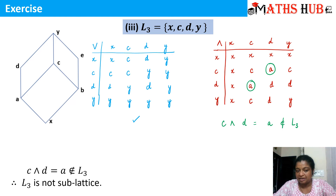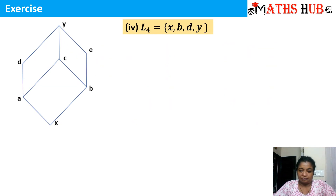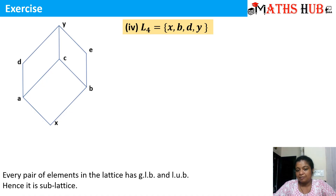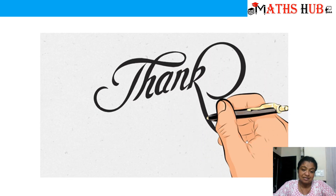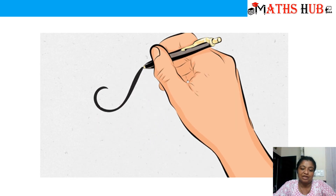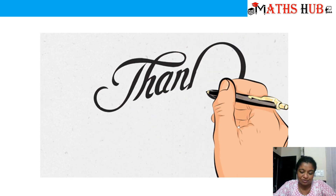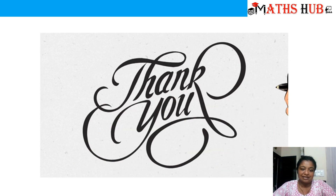I hope with these three examples you are able to understand how to check for a sub-lattice. I leave the fourth example for you as an exercise — do it and write to me in the comment box if you are able to follow it, and let me know if there is any doubt. You need to fill up the join and meet tables and check whether it is a sub-lattice or not. Thank you so much, do subscribe to my channel, and believe in yourself — you will definitely succeed.